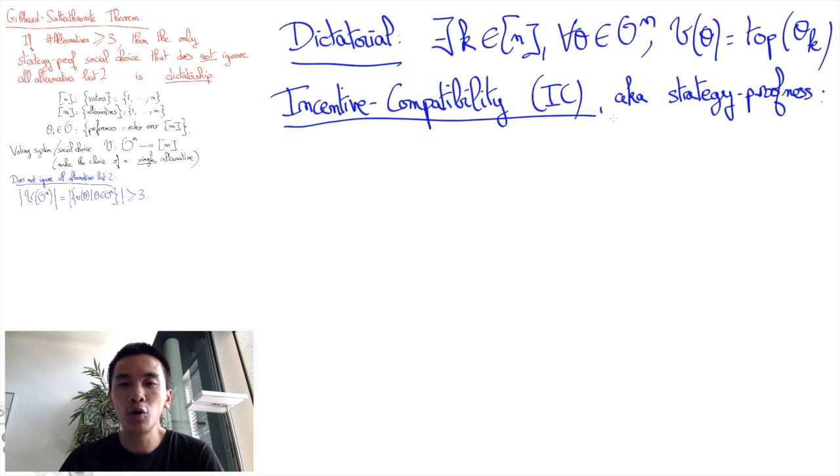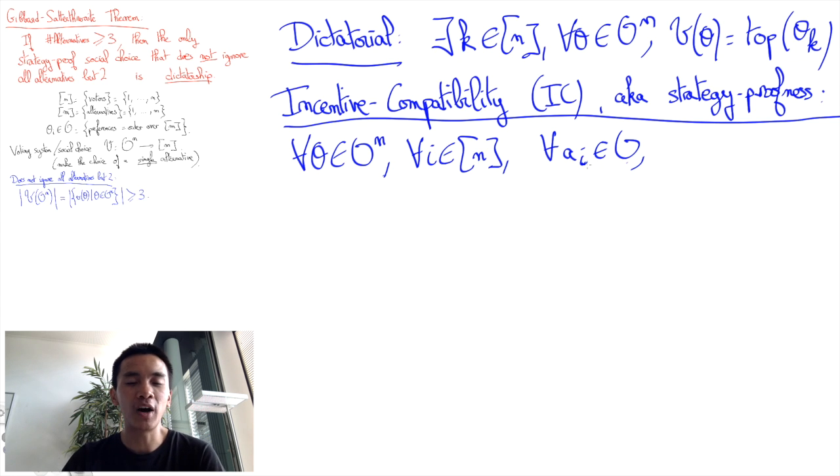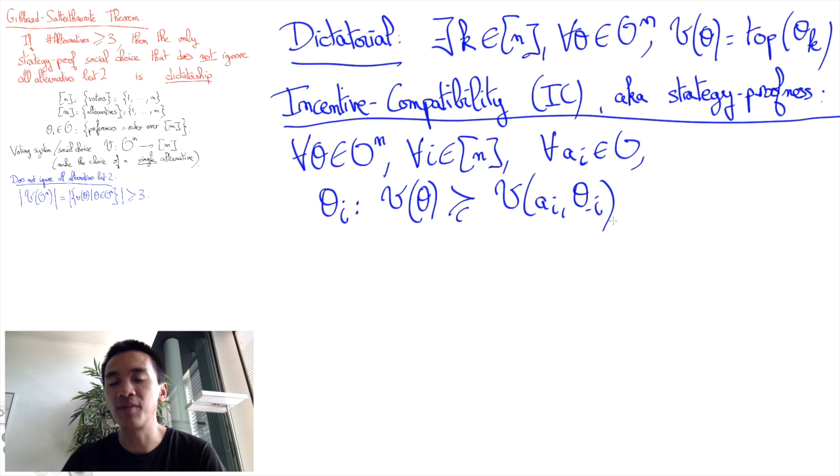Incentive compatibility says that no voter i gains by casting a ballot A_i in O instead of their preference theta_i. More precisely, for any preference profile theta, any voter i and any ballot A_i, voter i must prefer what they got by voting theta_i rather than A_i. That is, we must have theta_i says that V of theta is better or equal to V of A_i and theta minus i.